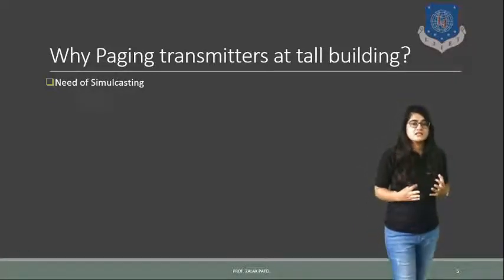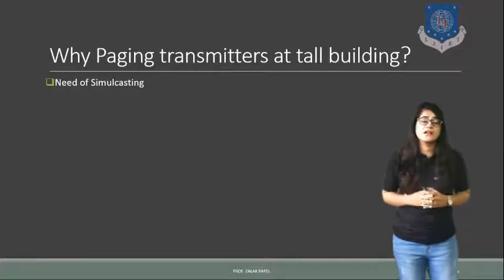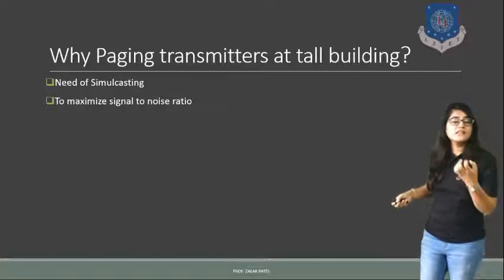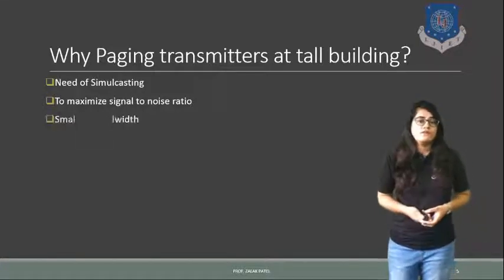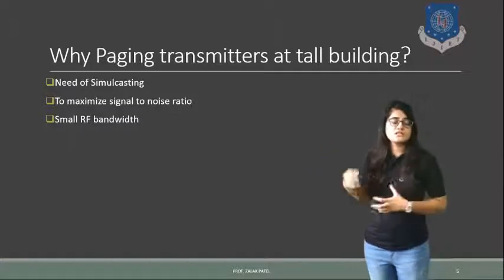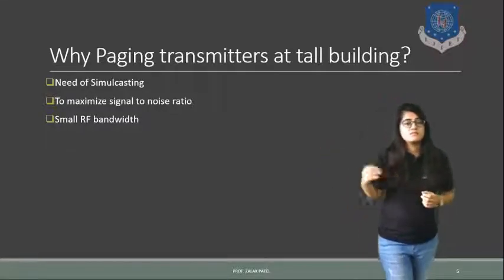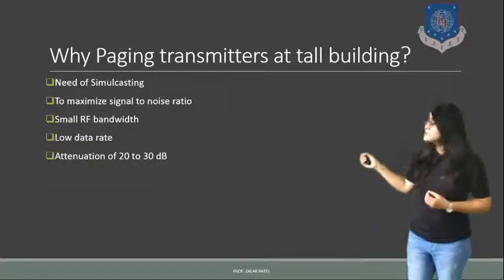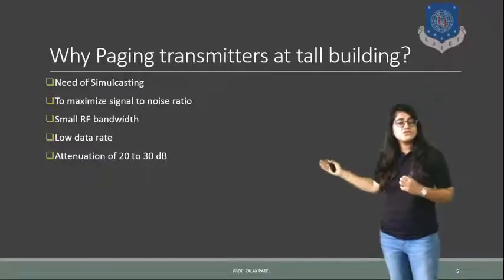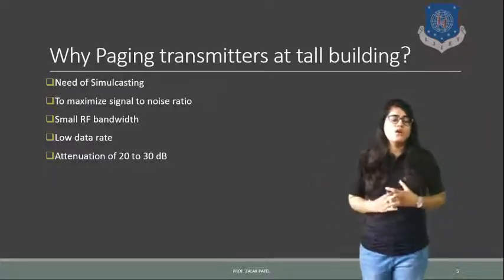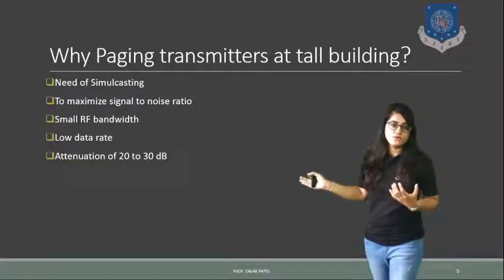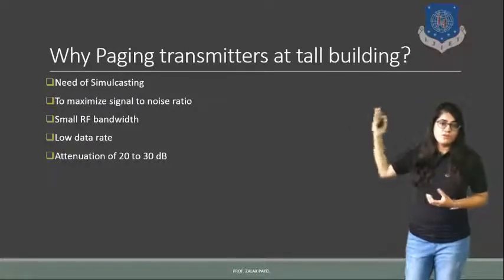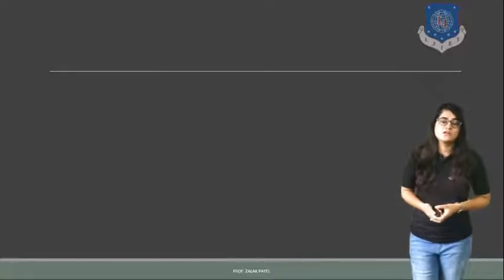The question is why pager transmitters are placed at tall buildings. A small RF bandwidth is required — meaning more radio frequency bandwidth is needed. The paging system offers a low data rate and an attenuation of 20 to 30 dB. We always try to minimize this attenuation level, and that is why we should keep these factors in mind — which is why paging transmitters are placed at tall buildings.